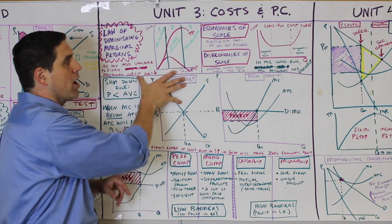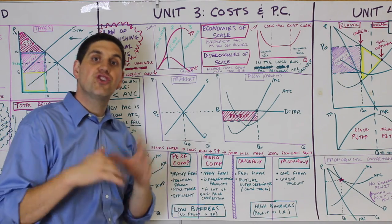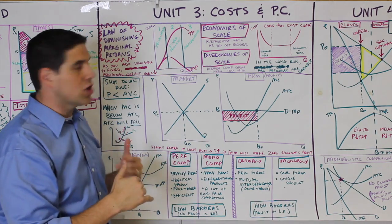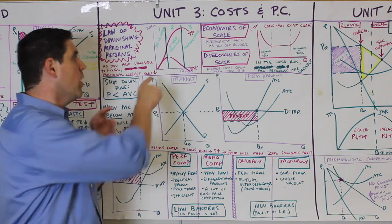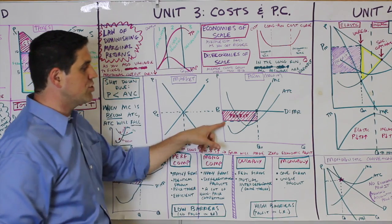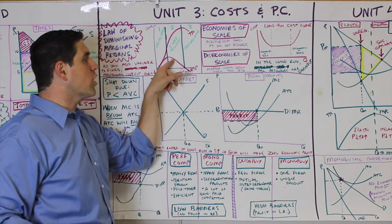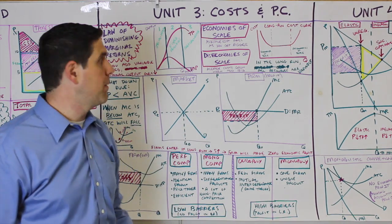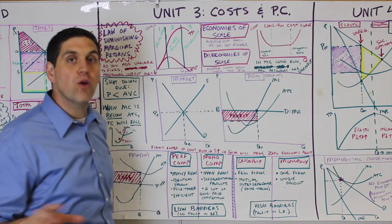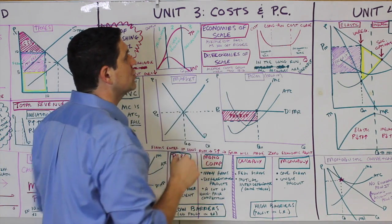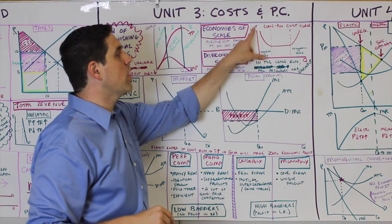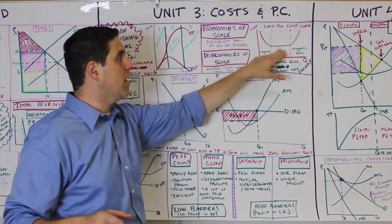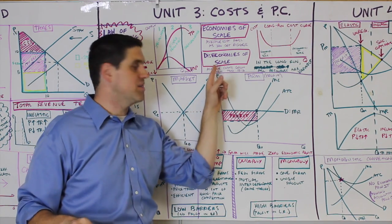That concept shows you the shape of the marginal cost curve. Since each worker produces more than the previous worker, marginal cost falls for those units — so MC always starts by going down. When each worker produces less than the previous worker, marginal cost starts going back up. There's also a long-run average cost curve. Economies of scale is when average costs are falling as you get bigger, then they level out — that's constant returns to scale. Eventually costs go back up — that's called diseconomies of scale.